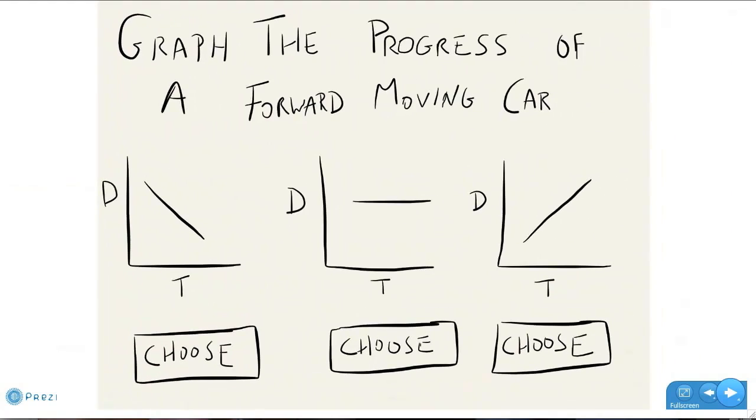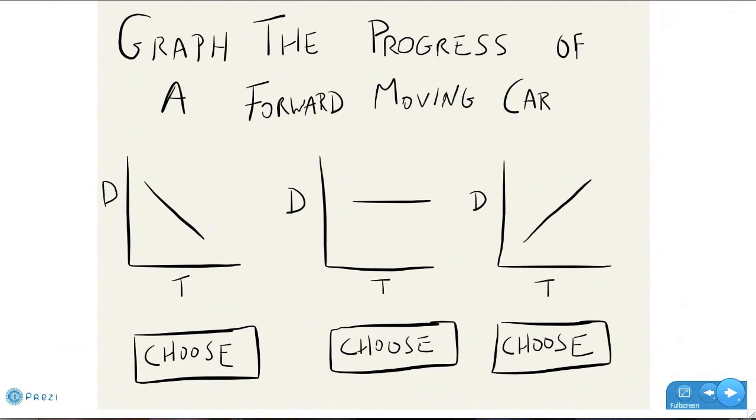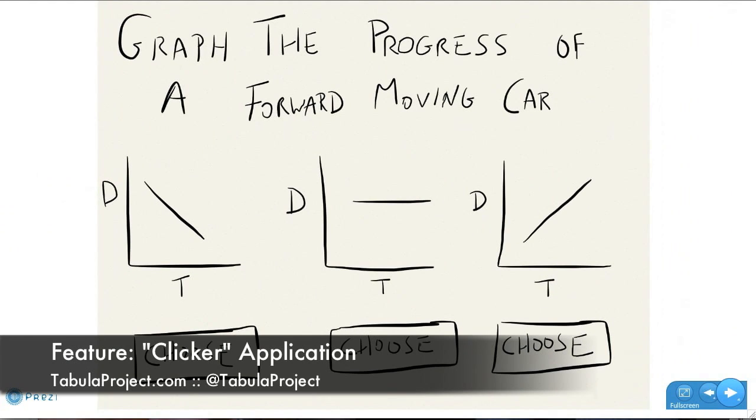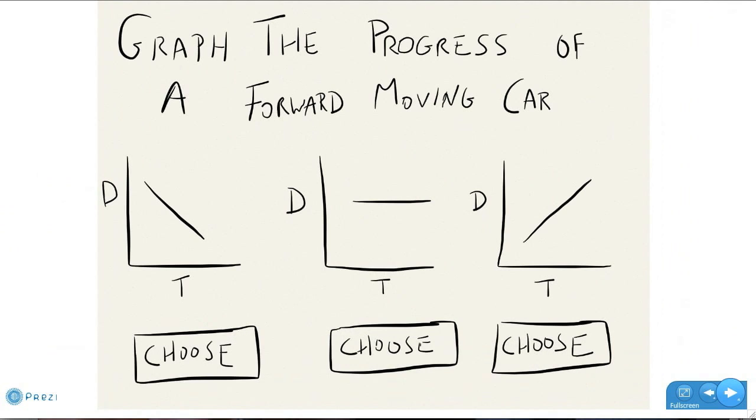Let's move on, and we'll look at an example of a learning activity planned around a tabula feature, a simple feature commonly known as the clicker. So if you imagine a game show like Jeopardy, where the contestants are all behind a podium, there's a question posed, and when you want to give your answer, you click in, you press the clicker button. Same kind of thing. In this case, we're looking at what a student would see on the screen. Graph the progress of a forward-moving car. Three choices, three graphs. Each one showing distance on the y-axis, time on the x-axis.